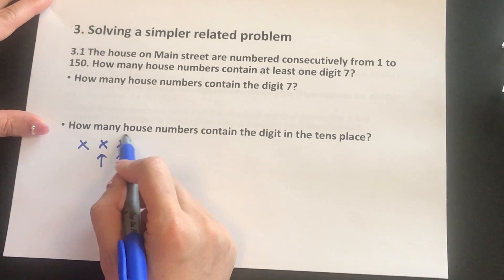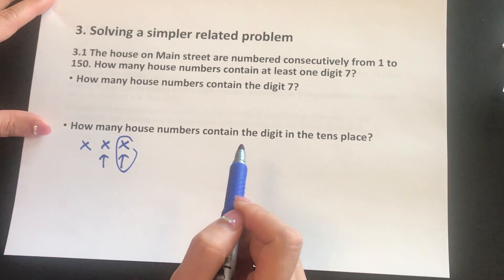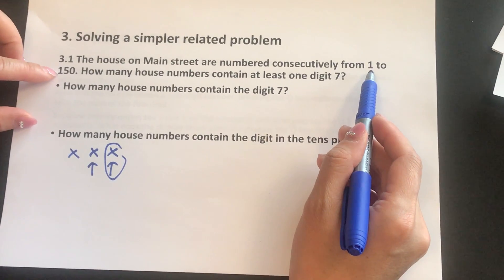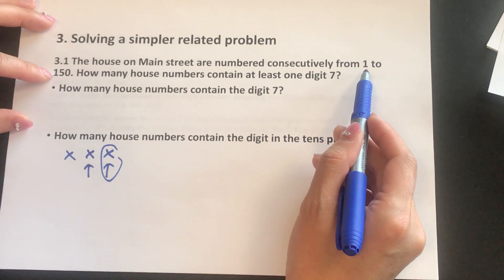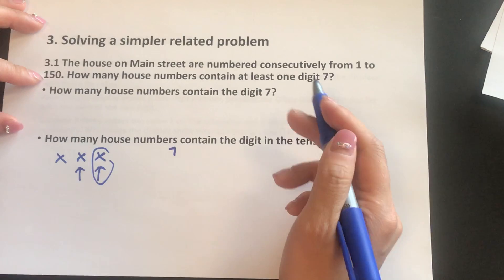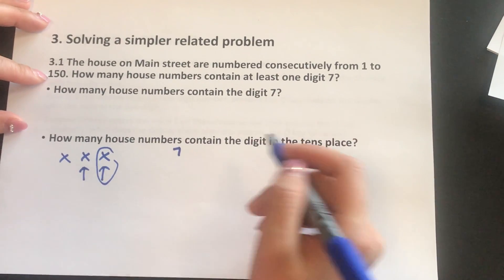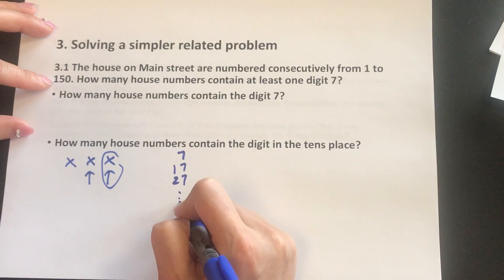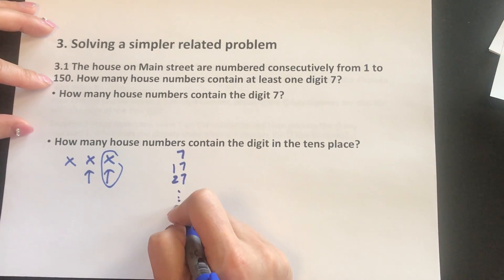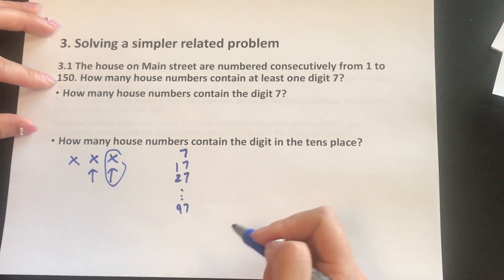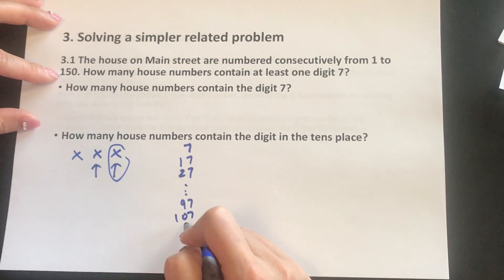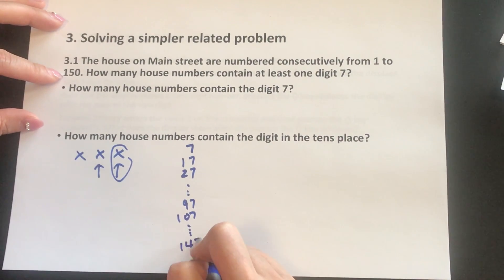So let's look at the first case. The 7 happens in the singles place. So from 1 to 150, the singles place starts with a single digit, which is number 7. And then the next one would be two-digit numbers. That's 17, 27, all the way to 97. Now we go to three-digit numbers. That would be 107 all the way to 147.